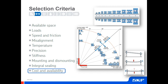It's interesting to notice that we have added cost and availability as a selection criterion. This is linked to the introduction of the term 'popular items' in the rolling bearings catalog, representing items that have a high level of availability. These are marked in the product tables with a little arrow symbol.